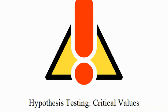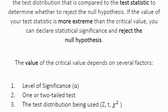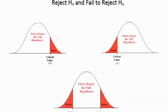Hey everybody, it's Professor Williams and today we're going to look at hypothesis testing and finding critical values. A critical value is simply a point on the test distribution that we compare to the test statistic to determine whether to reject the null hypothesis. If the value of your test statistic is more extreme or beyond the critical value, you can declare statistical significance and reject the null. The critical value depends on: your level of significance or alpha, whether you're running a one or two-tail test, and your test distribution — z, t, or chi-square.